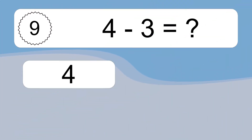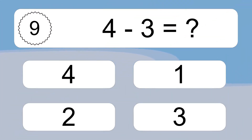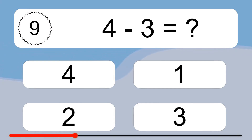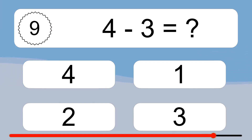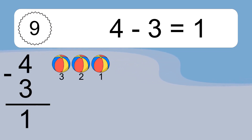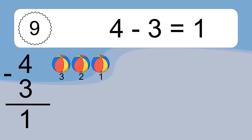4 minus 3 equals what? 4 minus 3 equals 1. Let's count it: 3, 2, 1.